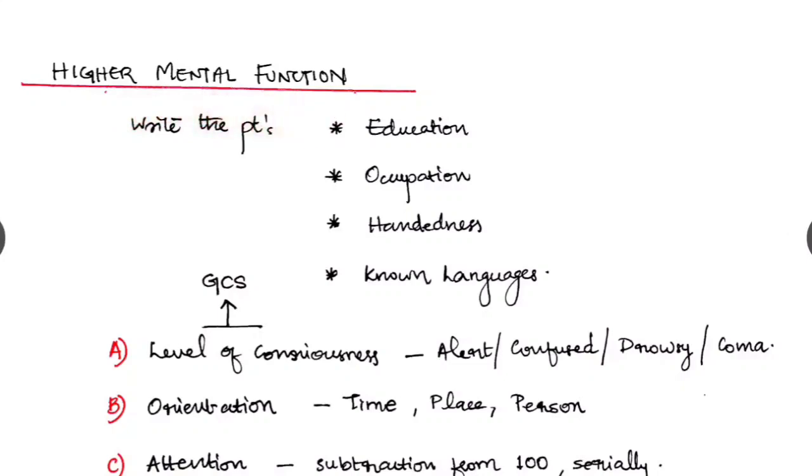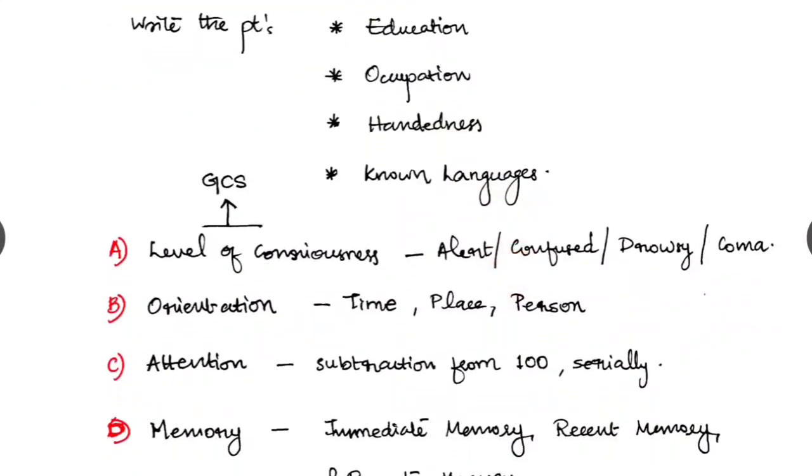Higher mental functions: write the patient's education status, occupation, the handedness and the known languages. The first point is the level of consciousness whether the patient is alert, confused, drowsy or coma. The Glasgow Coma scale comes under this but you need not write that. Second is the orientation with time, place and person.